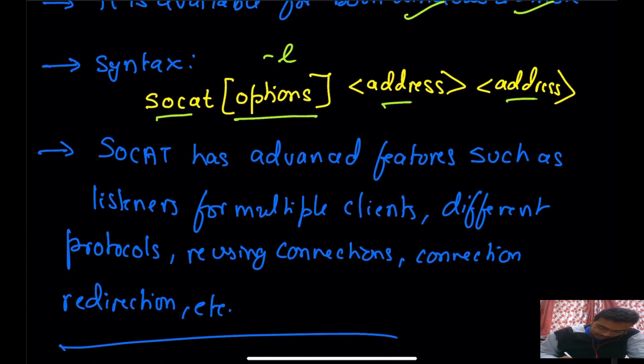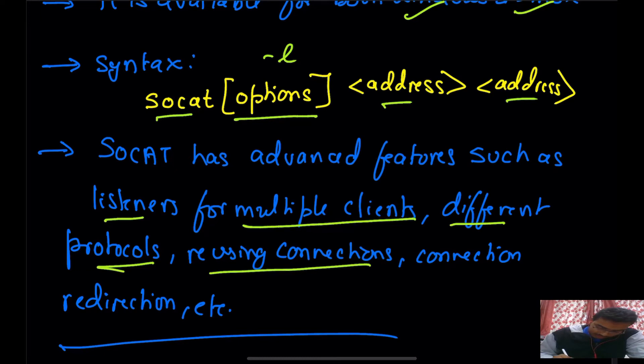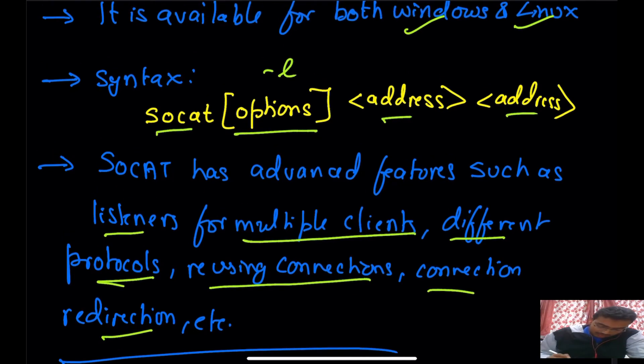SOCAT has advanced features such as listeners for multiple clients, different protocols, reusing connections, connection redirection, etc., which is similar to netcat.